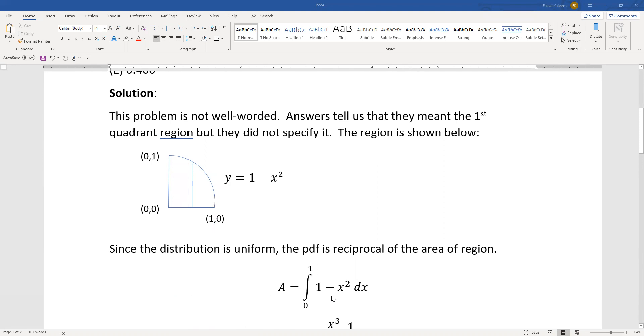The distribution is uniform. In case of a uniform distribution of two functions, the joint pdf is the reciprocal of the area of the region.